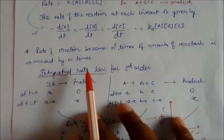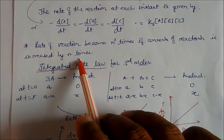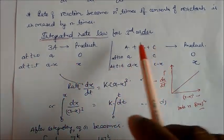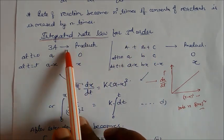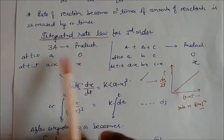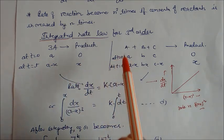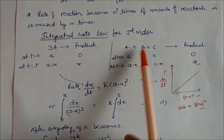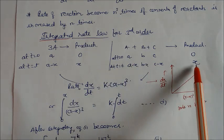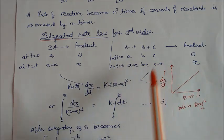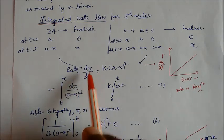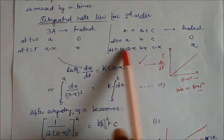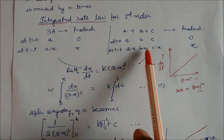The rate of reaction becomes N³ times if the concentration of reactant is increased by N times. For the integrated rate law, consider reaction 3A → product. At t=0, concentration is A and product is 0; at time t, concentration is A−x and product is x. For A + B + C → product with different concentrations, at t=0 concentrations are A, B, C; at time t they become A−x, B−x, C−x. Using differential rate law: dx/dt equals K(A−x)³.